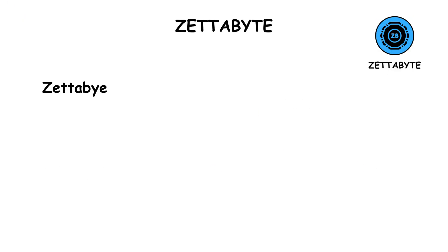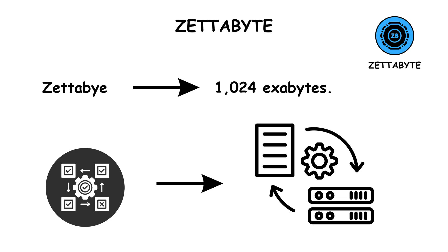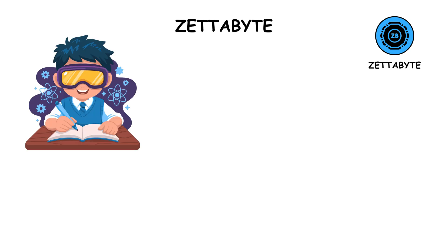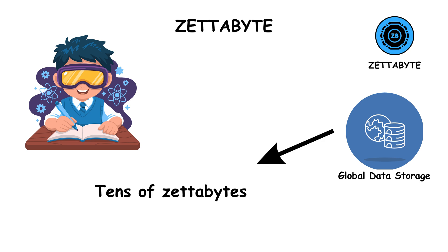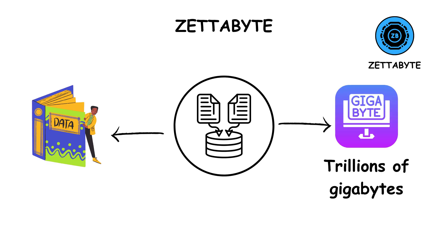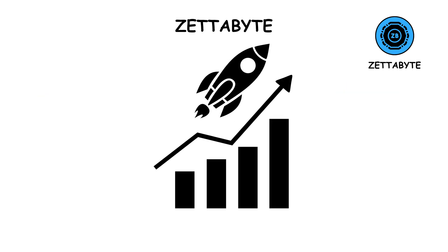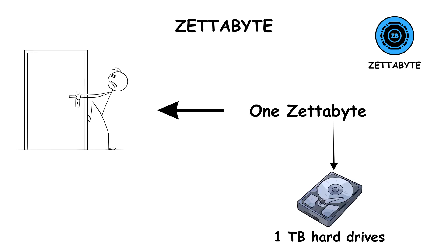A zettabyte equals 1,024 exabytes. This unit is used to measure the entire world's data. According to digital studies, global data storage surpassed tens of zettabytes recently, meaning we've collectively created data that's measured in trillions of gigabytes. To give an idea of scale, if you tried to store just one zettabyte of data on regular 1-terabyte hard drives, you'd need 1 billion of them — enough to fill an entire city.